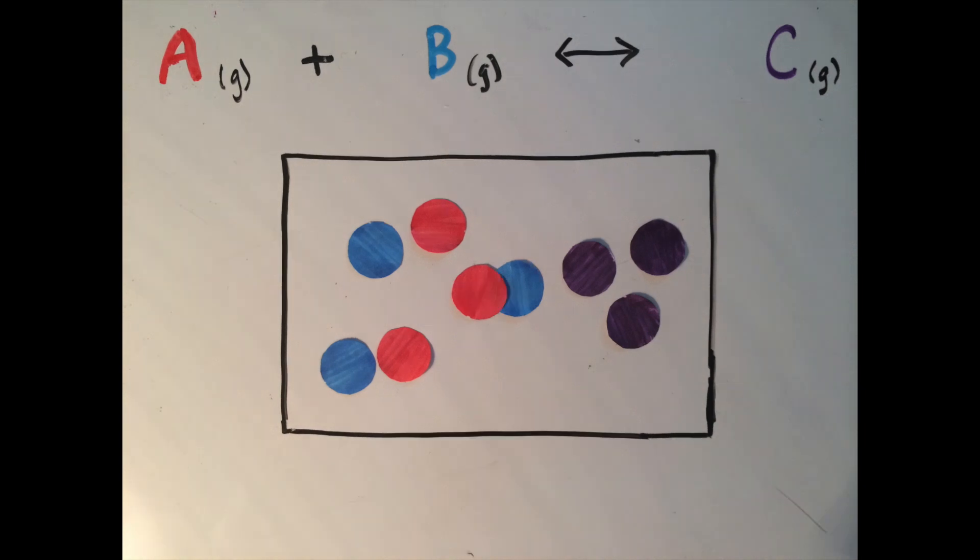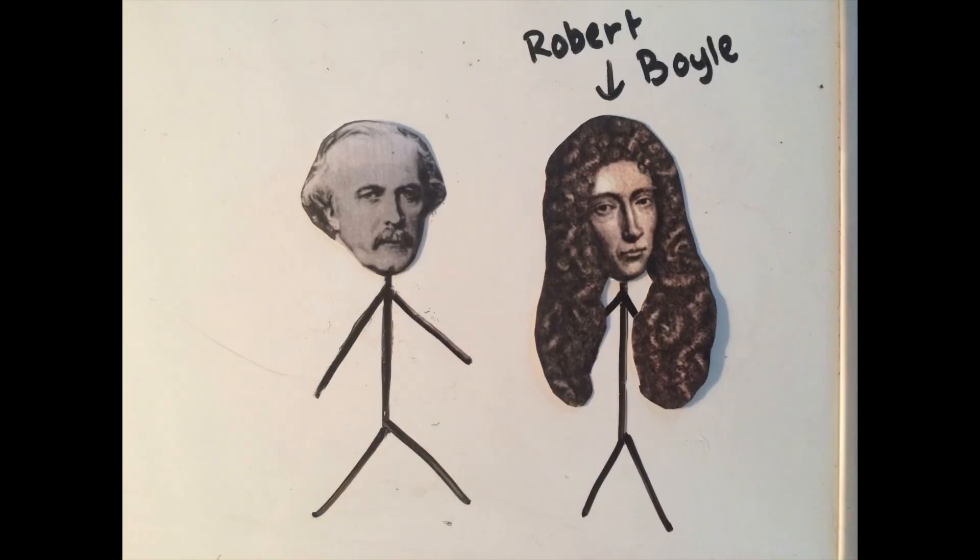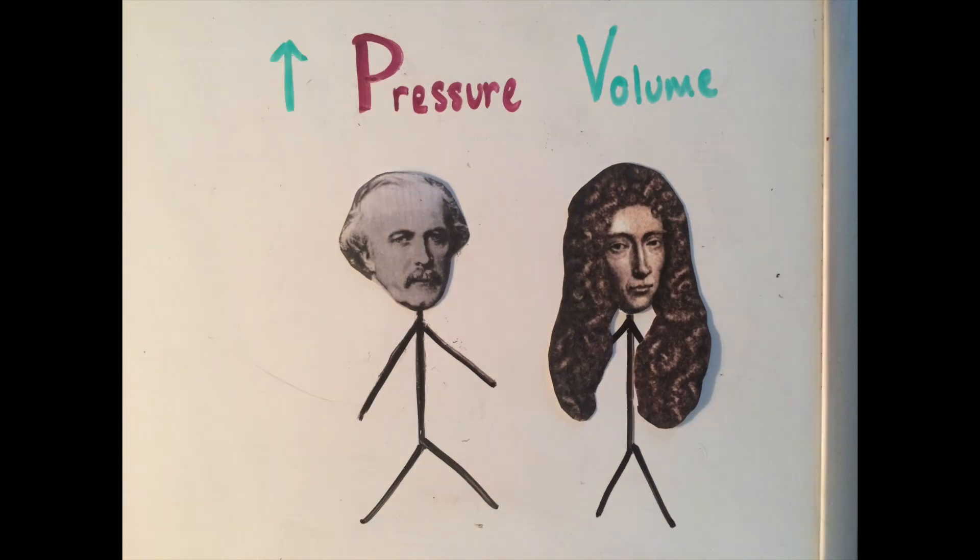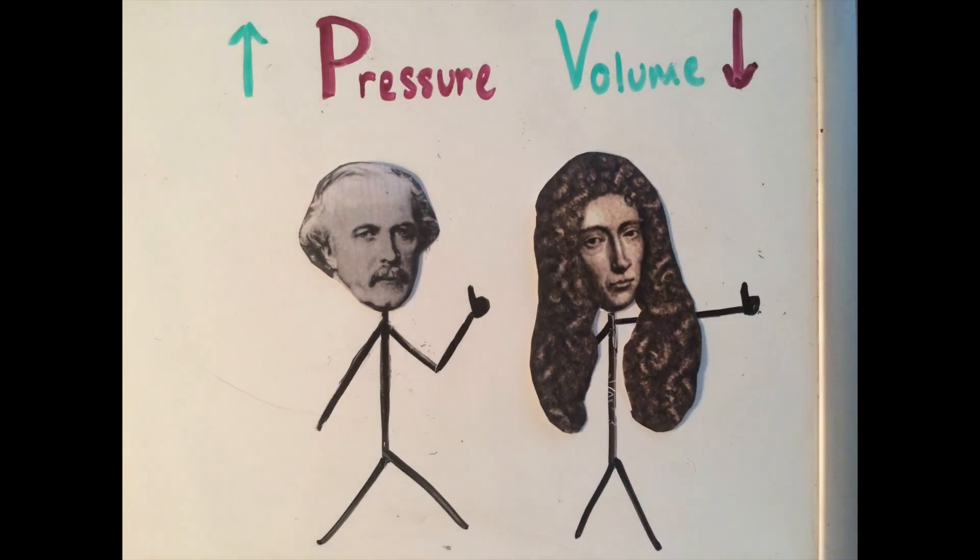Yeah, just use the same thing when thinking of volume. Gotta go back to ideal gas law. PV equals nRT, yeah, you got it right. Yeah.